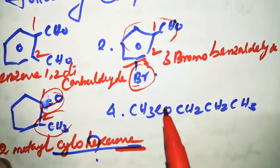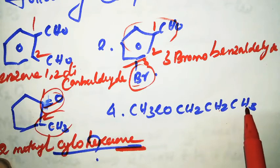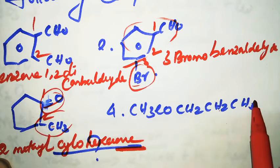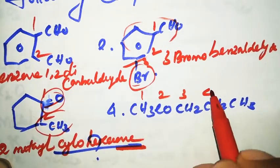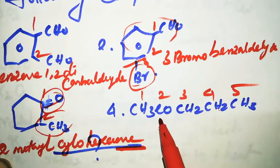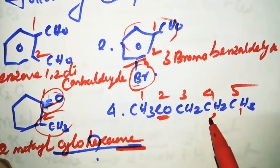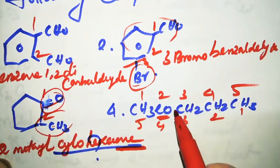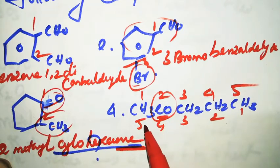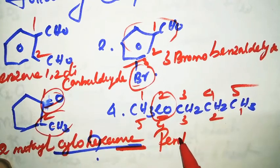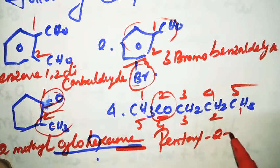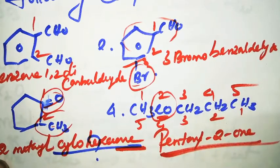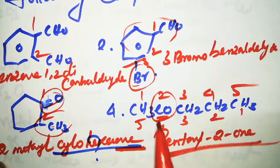The fourth compound is CH3-CO-CH2-CH2-CH3, which has five carbons total. The functional group is at position two, giving the least number. Five carbons means pentane, so the IUPAC name is pentan-2-one. You can understand? Try many more examples from the textbook.